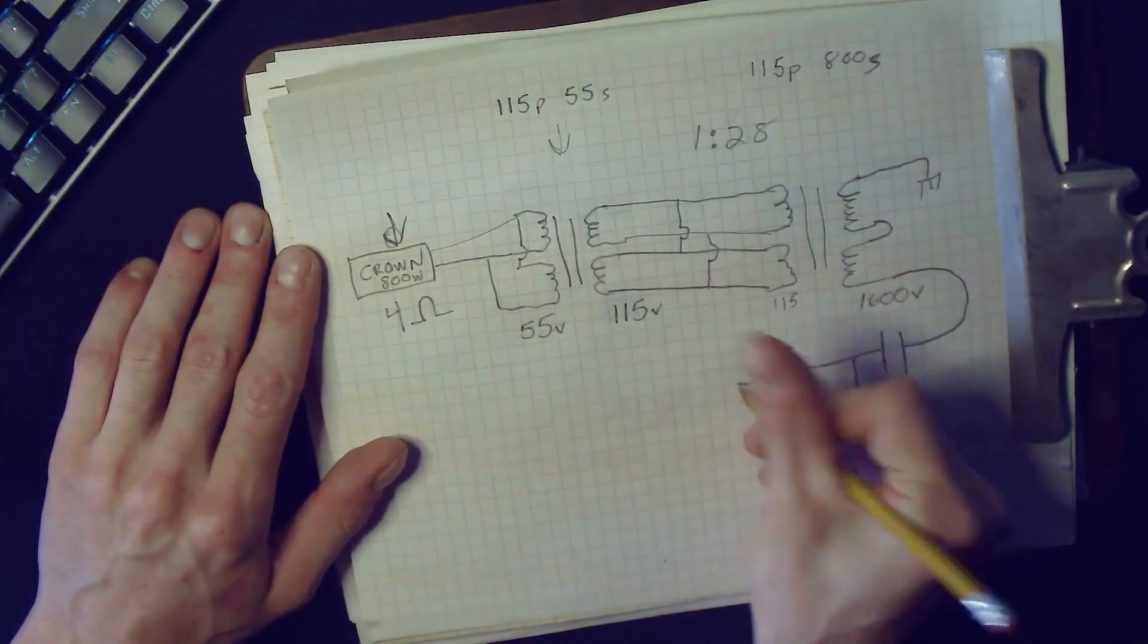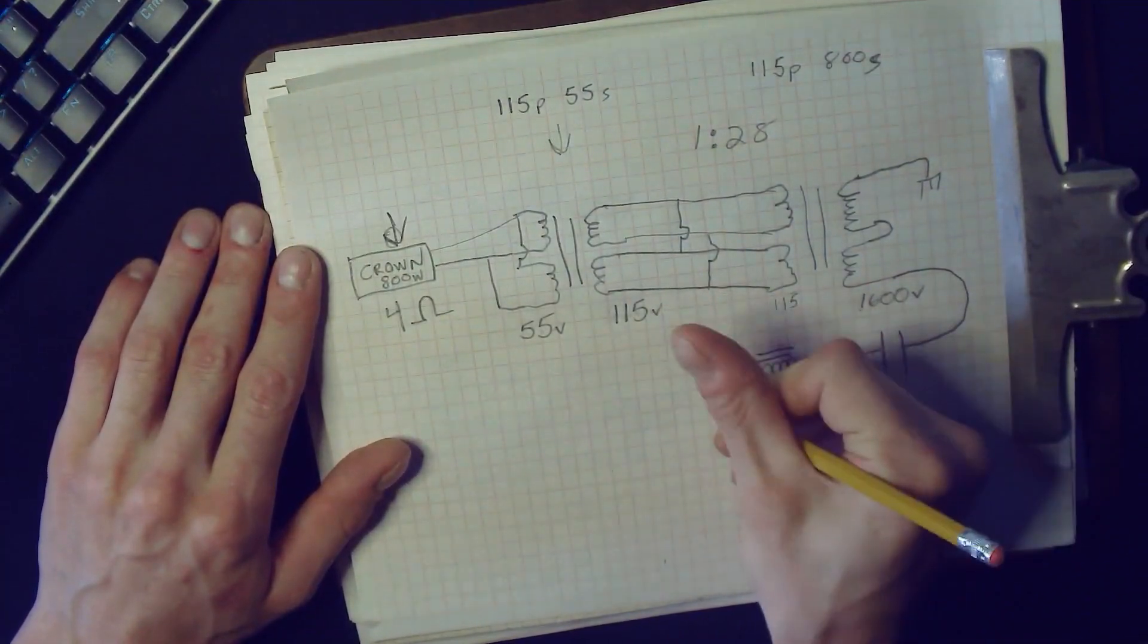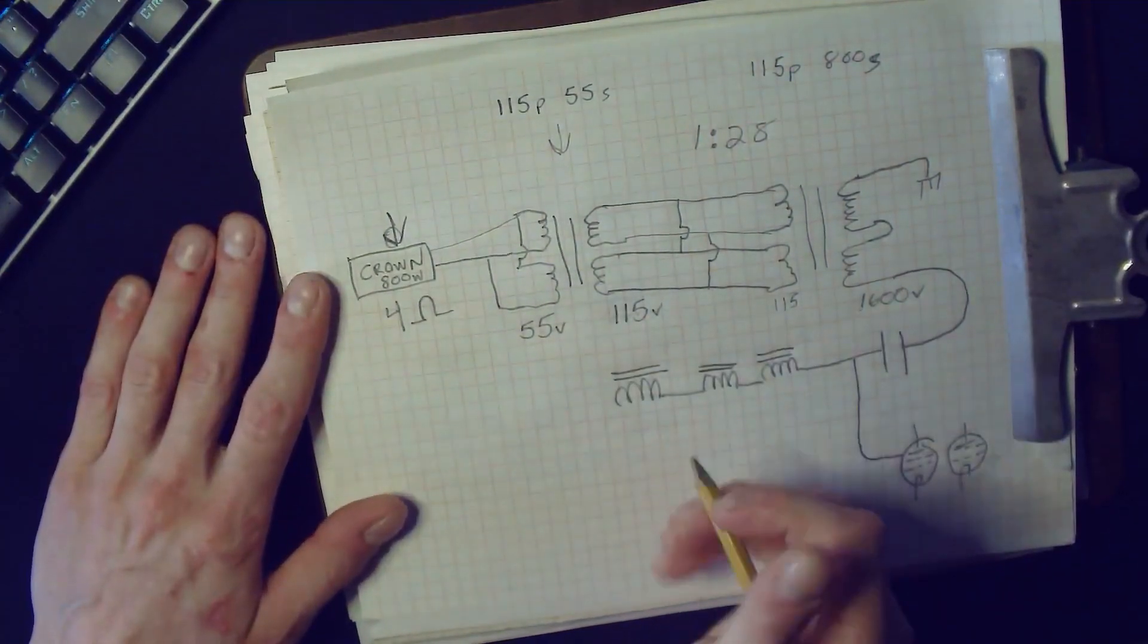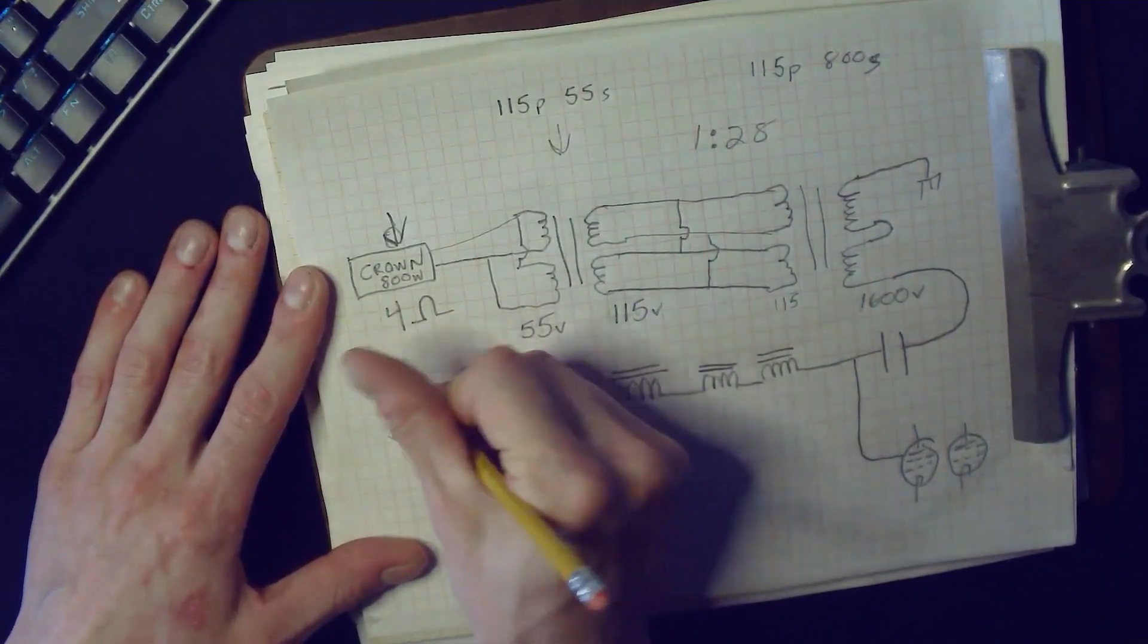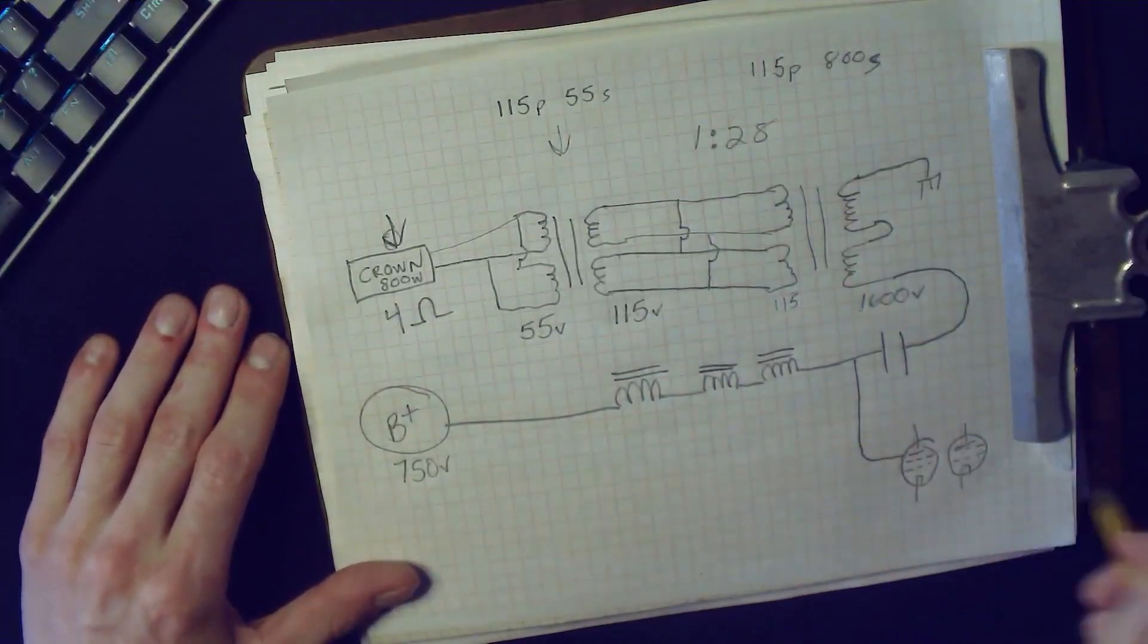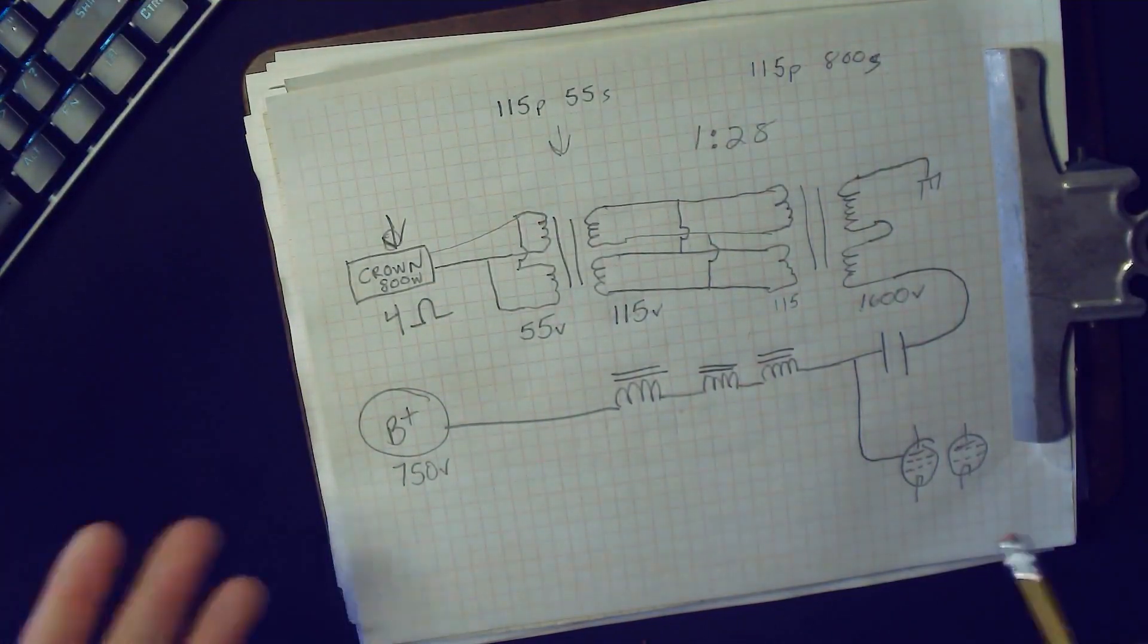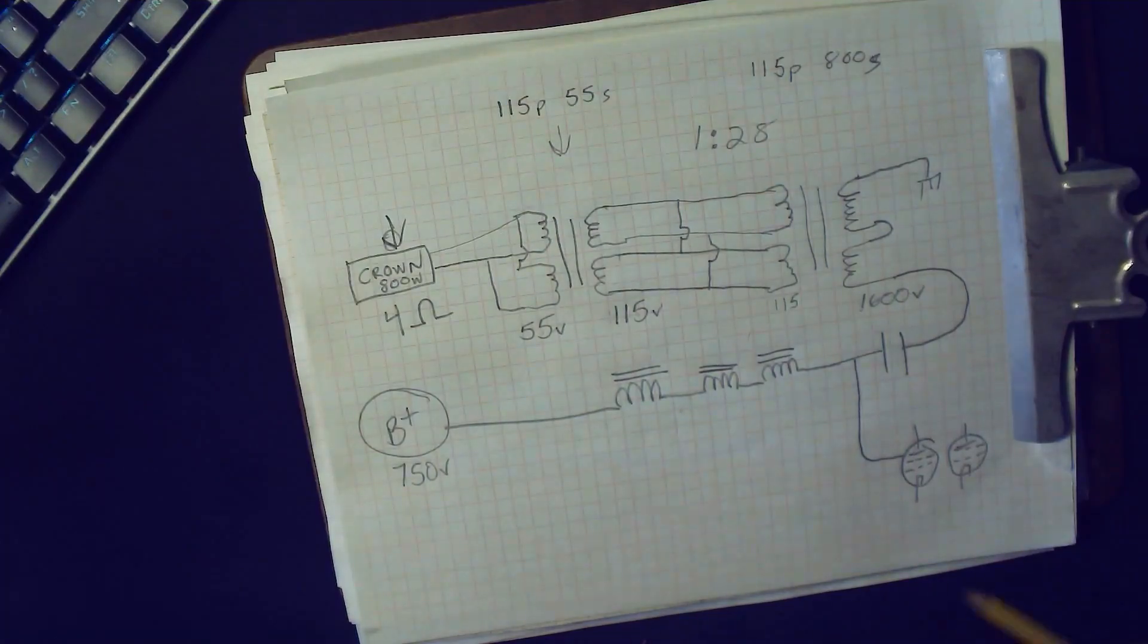So we're going to take a modulation reactor choke, and I use a whole bunch of them in series like I showed you to get enough henry there to make it safe. So there you go. Our B+ 750 volts feeds right through that, right to the tube. And that is how you use the Antec transformers as a modulation transformer to externally modulate a boat anchor like a Viking 2.